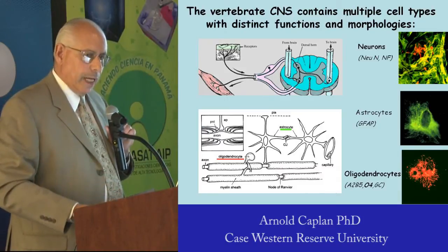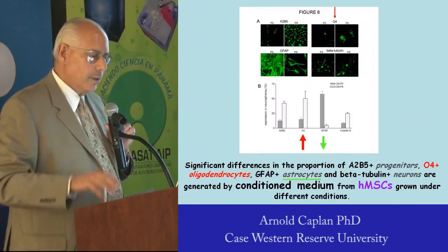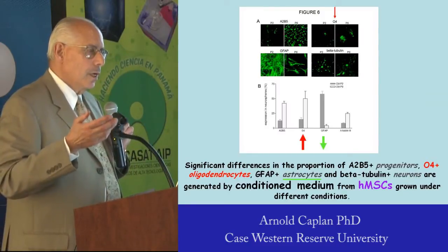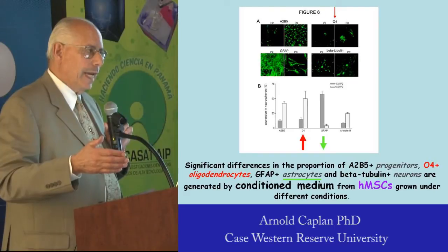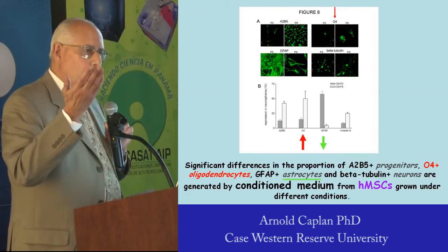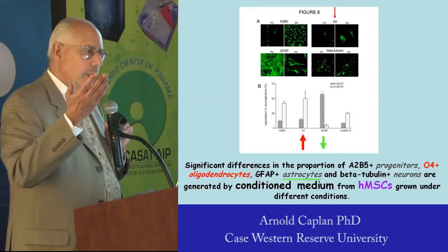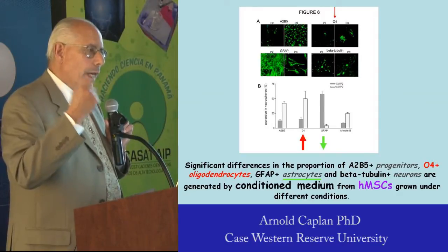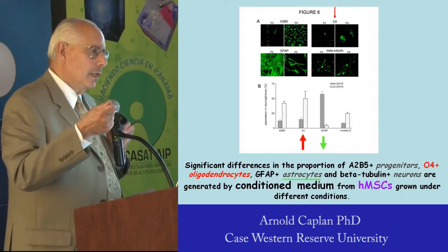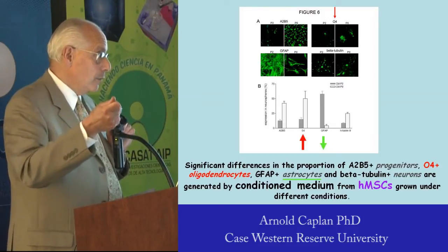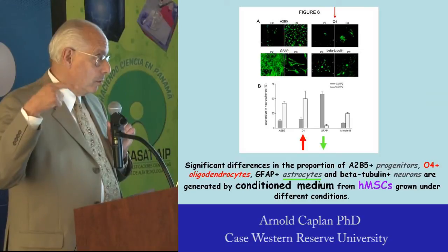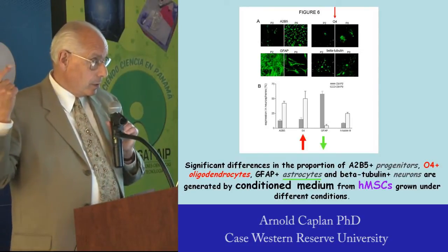When he put that conditioned medium on the differentiated cells, he saw a ten-fold decrease in astrocyte formation and a four-fold increase in oligodendrocyte differentiation. So what MSCs make can take neural stem cells and direct them to become oligodendrocytes — the neuron axon-wrapping cells that provide myelin insulation.